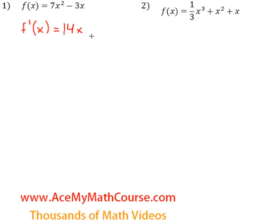Subtract 1 from the exponent, so that's 14x. The derivative of minus 3x is just minus 3.